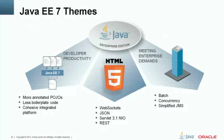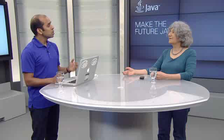The three major themes are: delivering HTML5, dynamic, scalable applications; increasing developer productivity through simplification and new container services; and meeting the additional demands of the enterprise by adding new enterprise technologies. We'll be exploring all of these aspects in more detail in the context of the new Java EE 7 APIs. The first thing in the HTML5 theme is JSON. JSON is a key technology for data transfer within HTML5 applications. With JSON 1.0, Java EE 7 adds new APIs to enable the parsing and generation of JSON text and objects.